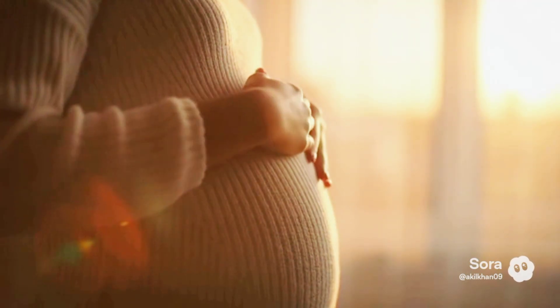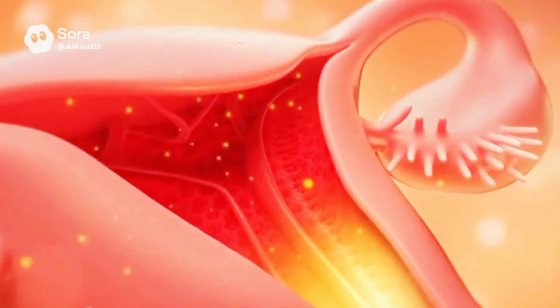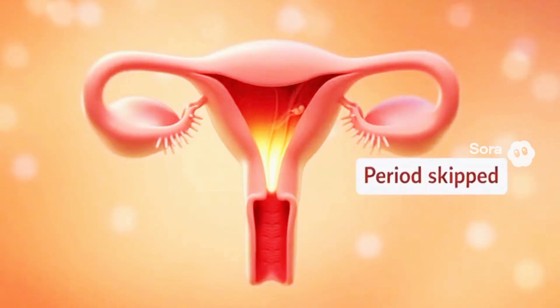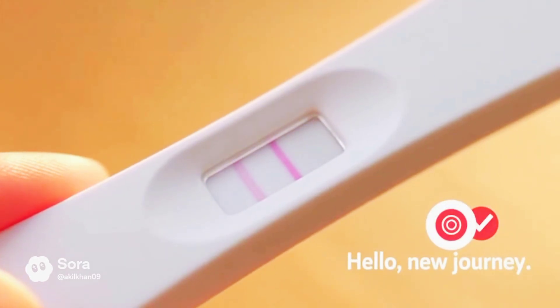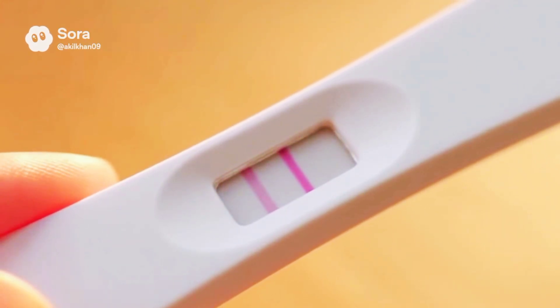As the cluster settles into the rich lining of the uterus, pregnancy begins. Your body sends a special signal to your uterus: hold on to that lush lining. Those hormones tell it to keep the lining so the tiny embryo can settle in. And because the lining stays put, your period doesn't arrive. Skipping that period is often the very first sign.